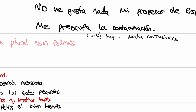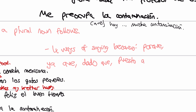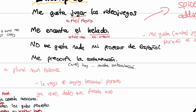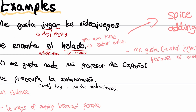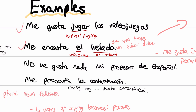There are four ways of saying because. We have porque, ya que, dado que, and slightly less commonly, puesto que. Let's use some of these. Me encanta el helado — why? Ya que tiene un sabor dulce. Because it has a sweet taste. So: I like ice cream because it has a sweet taste. Sabor dulce — a sweet taste.